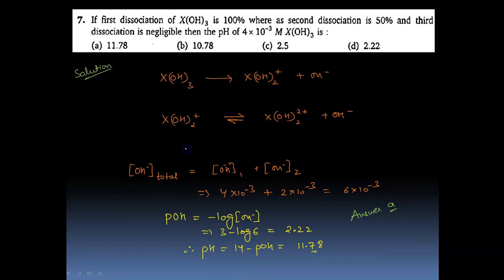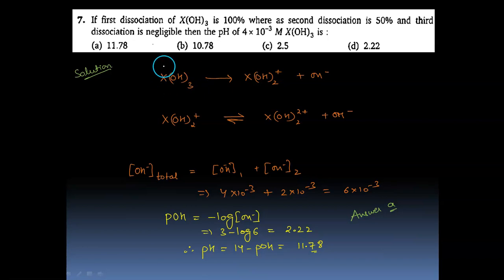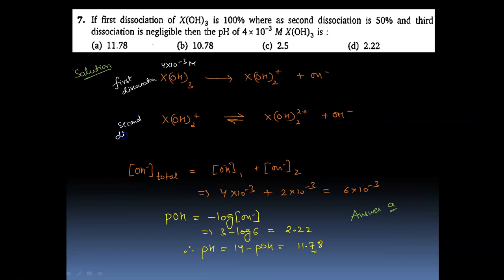Now we see another important question on ionic equilibrium — question number 7. It says: if the first dissociation of X(OH)₃ is 100%, the second dissociation is 50%, and the third is negligible, find the pH of a 4×10⁻³ M X(OH)₃ solution. The first dissociation goes to completion, so the entire concentration of X(OH)₃ becomes [OH⁻] in the first step, which is 4×10⁻³ M. The XO(OH)₂⁻ intermediate is also 4×10⁻³ M.